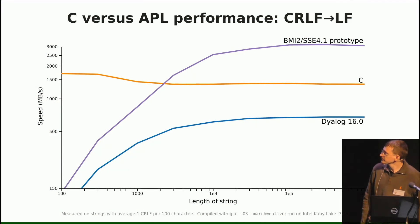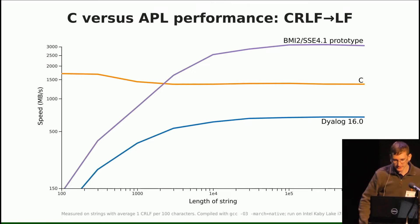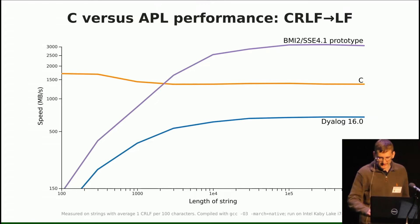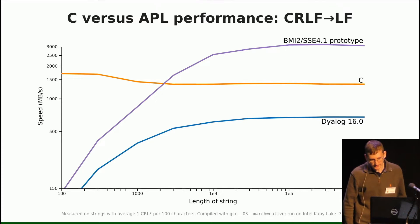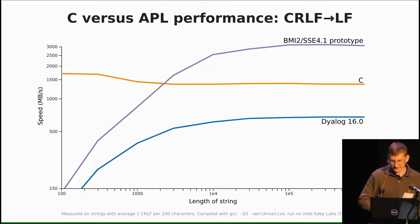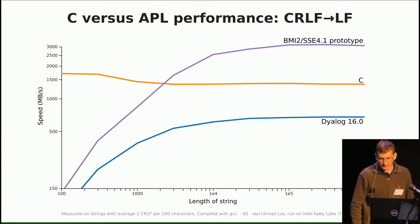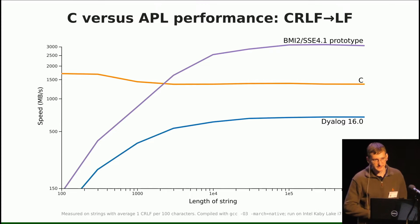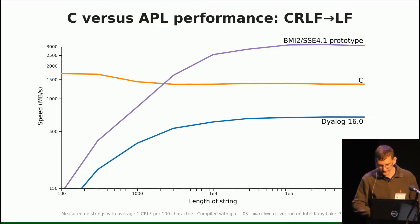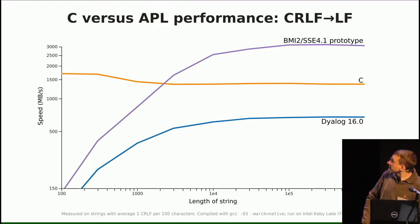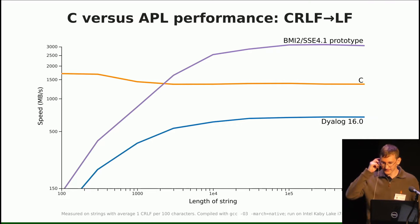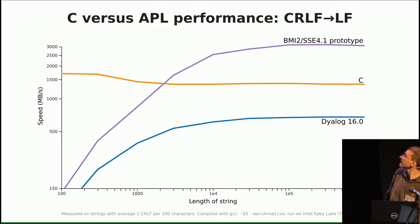Last year I showed you this graph. There is a simple test function that I wrote in both C and APL that was replacing CRLF line endings in a file with just plain LF. I showed you that Dyalog 16 doesn't outperform C, but Dyalog 17 as it stood with the prototype I was working on did.